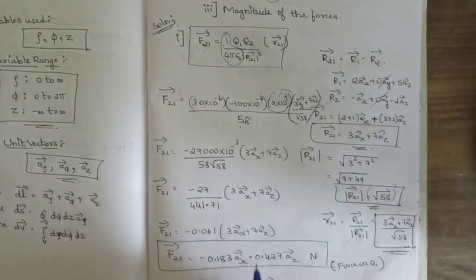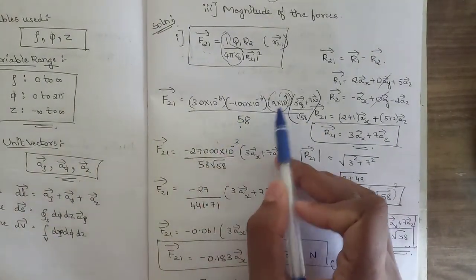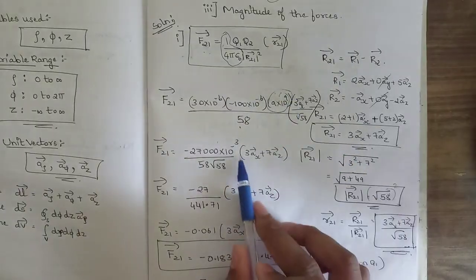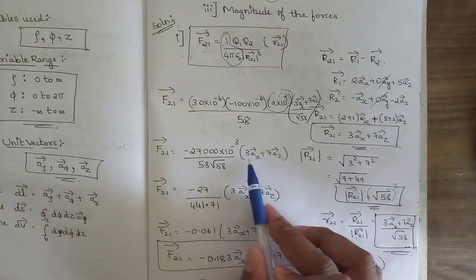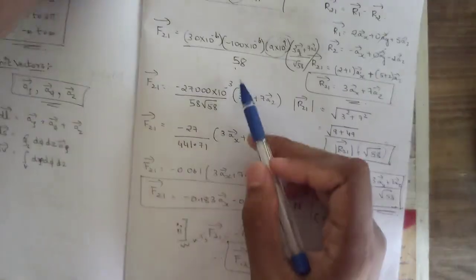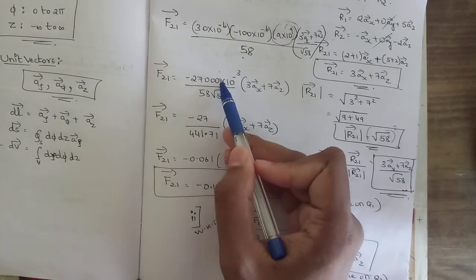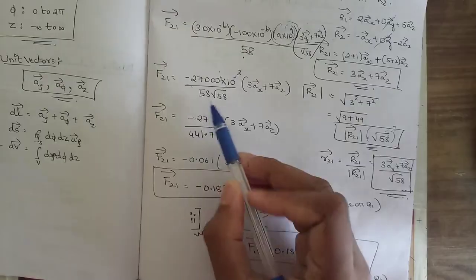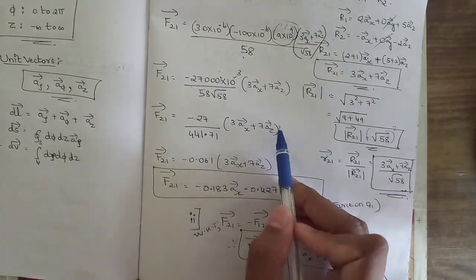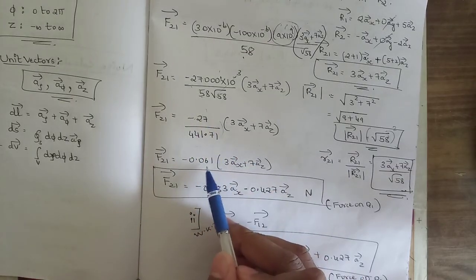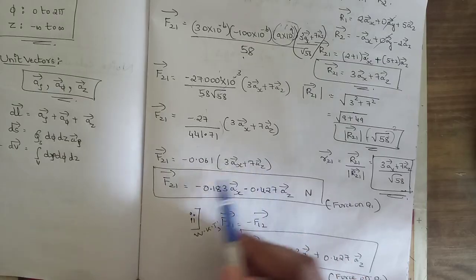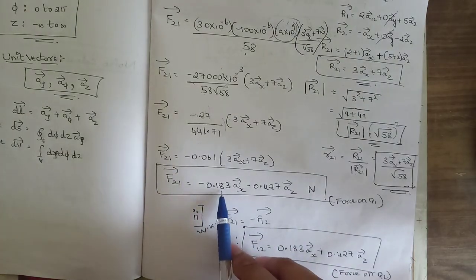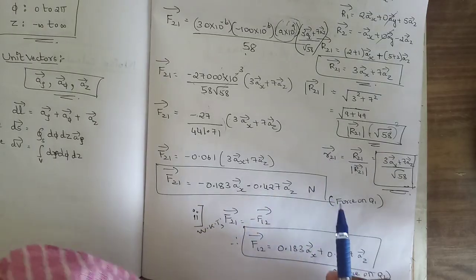Multiplying 30 × (minus 100) × 9 gives minus 27000. The powers of 10 combine as 10⁻⁶ × 10⁻⁶ × 10⁹ = 10⁻³. So the expression becomes minus 27000 × 10⁻³ divided by (58 × √58), times (3ax + 7az). After simplification, dividing through gives approximately minus 0.061, multiplied by 3ax and 7az. The final answer for F21 is minus 0.183ax minus 0.427az Newtons.